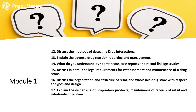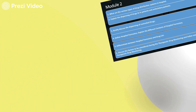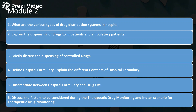Other important questions for module 1: discuss the methods of detecting drug interactions. Explain the adverse drug reactions reporting and management system. What do you understand by spontaneous case reports and record linkage studies? Discuss in detail the legal requirements for establishment and maintenance of a drug store. Discuss the organization and structure of retail and wholesale drug stores with respect to types and design. Explain the dispensing of proprietary products and maintenance of records of retail and wholesale drug products.